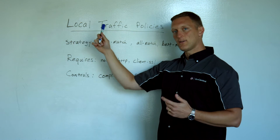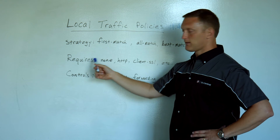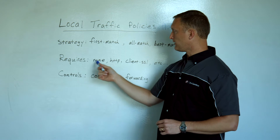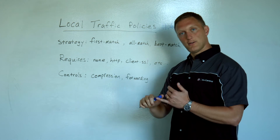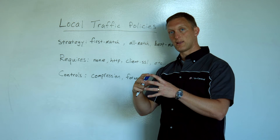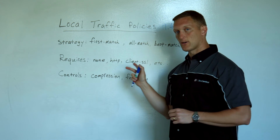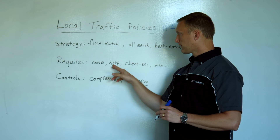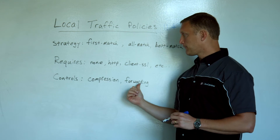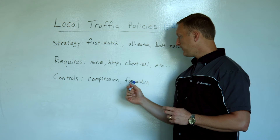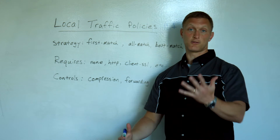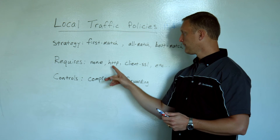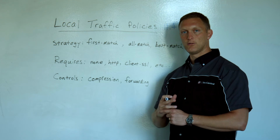When you create your local traffic policy, you give it a name, you give it a strategy, and then there's a requires section. On requires, you can say it doesn't require anything, or there's HTTP, there's TCP, there's client SSL — a few different aspects you can select. Based on what you say it requires, controls will pop up that are available. For example, if you select requires HTTP, then forwarding would be one of the controls available, and you could do a URL redirect — which is a hugely popular thing people use iRules for — but you can now use a local traffic policy to do URL redirects.